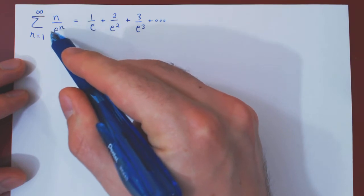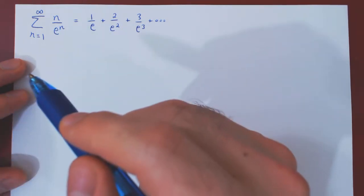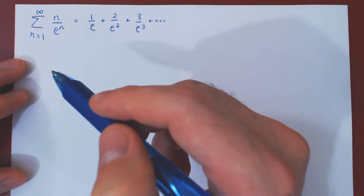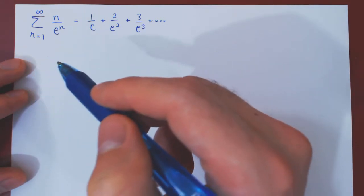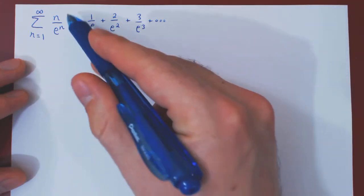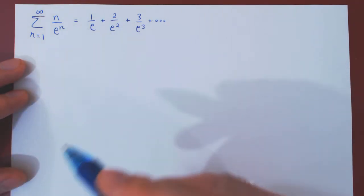As there is an exponential function, we can use, instead of the integral test, the ratio test. And as we are about to find out, the ratio test will give us a one-line solution.